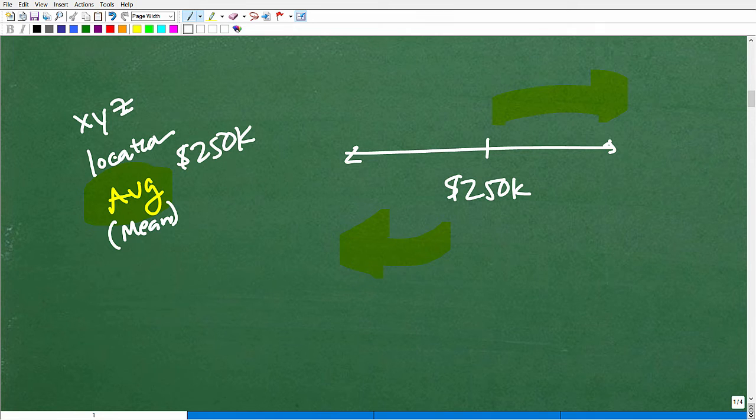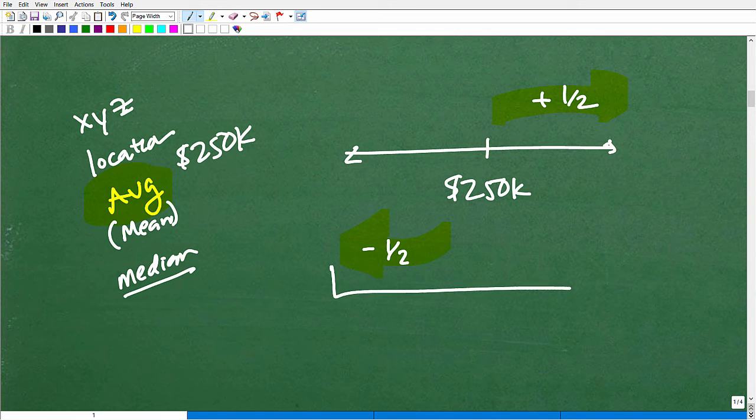The reason why I'm talking about this is because these terms come up frequently. If I told you the median home price is $250,000, then yes, half of the homes would be greater than $250,000 and half would be less than $250,000. So these things mean something.